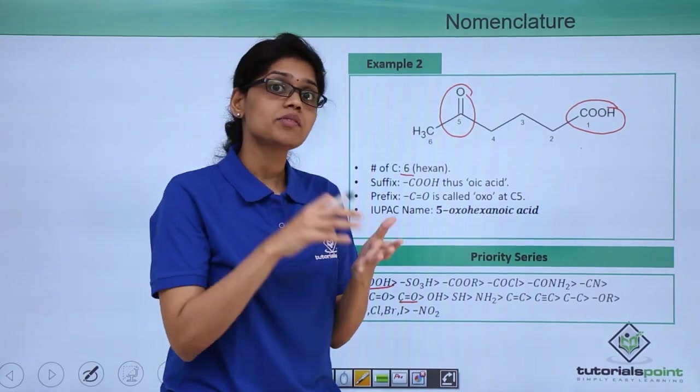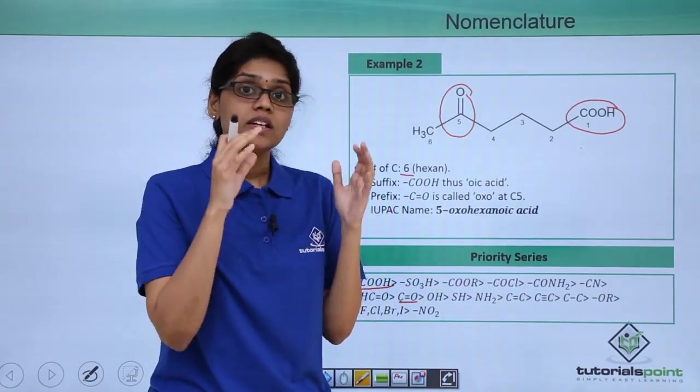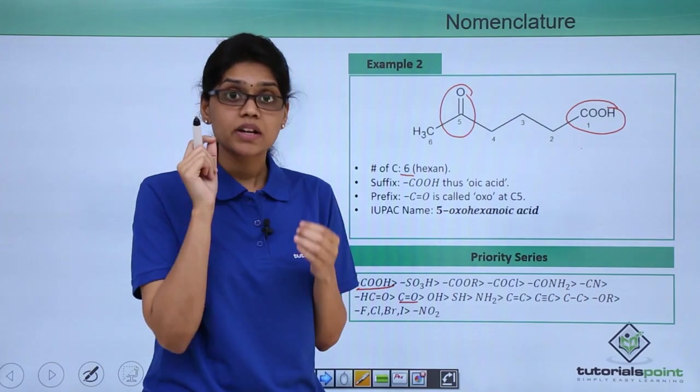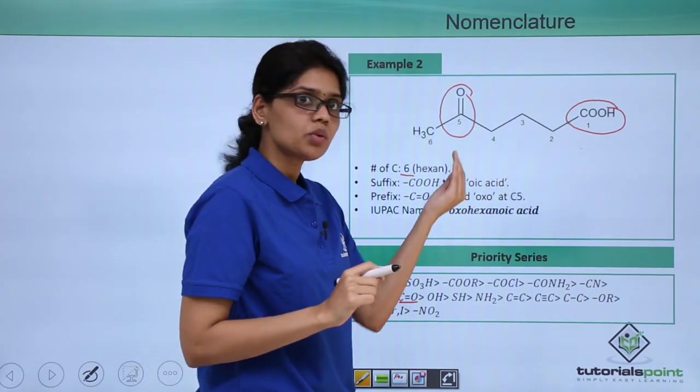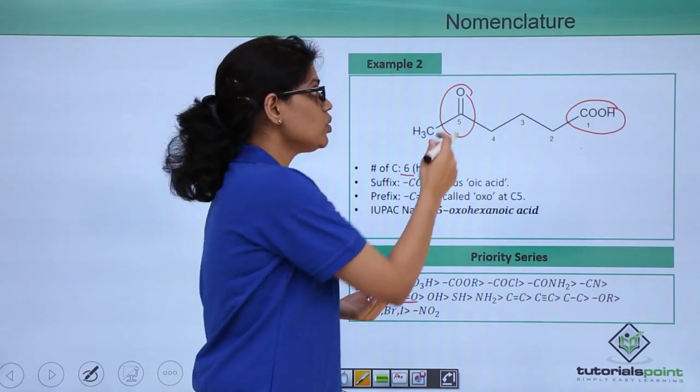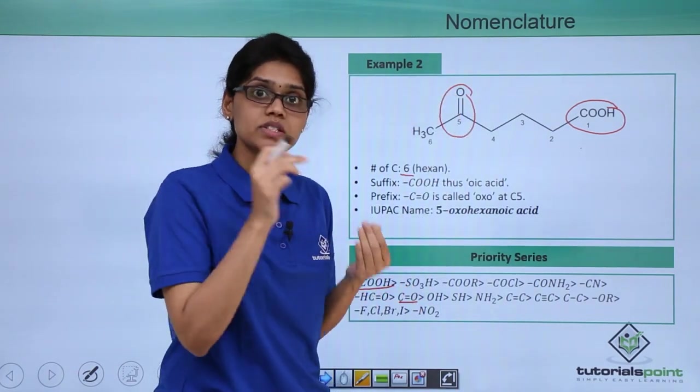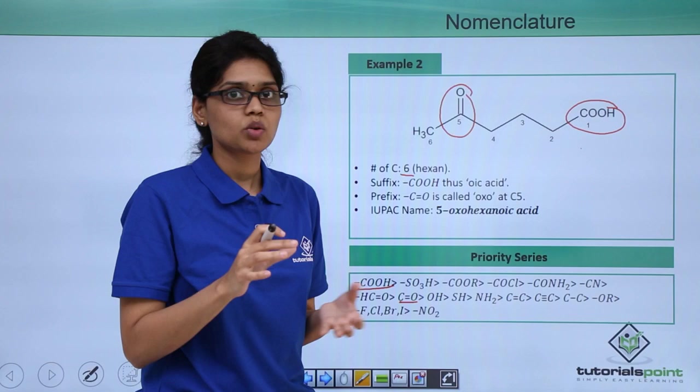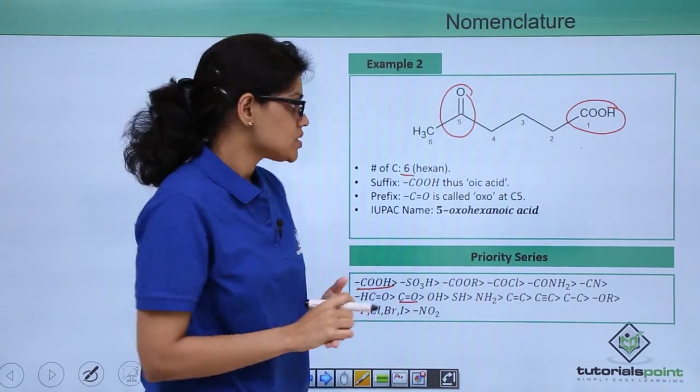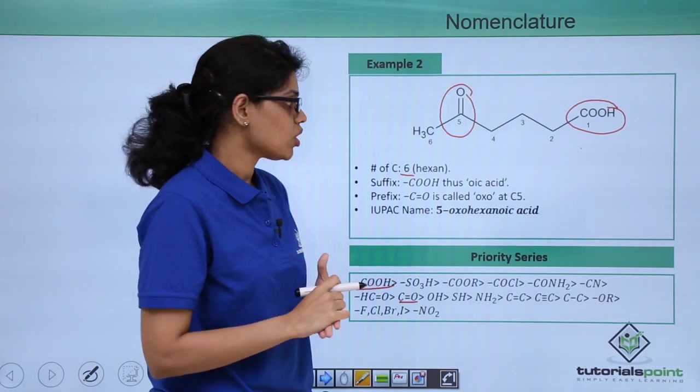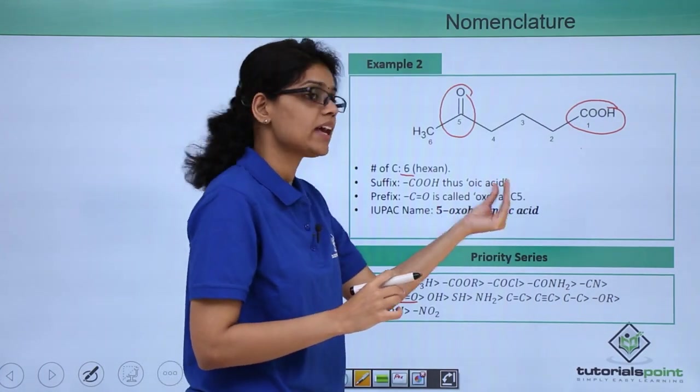We remember that whenever we have a functional group, numbering is done in such a way that the principal functional group will get the lowest number. Based on that we now know how to do the numbering and we know at which carbon position we have the functional group C double bond O which will now act as a substituent. You can see that the name of this particular compound would be 5-oxohexanoic acid.